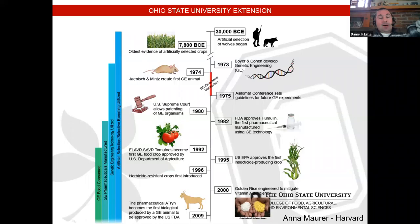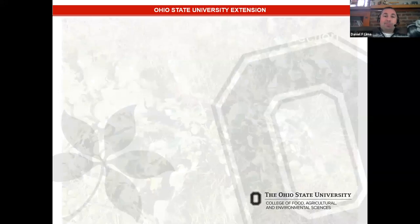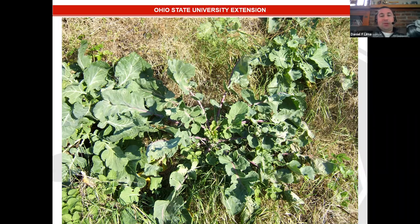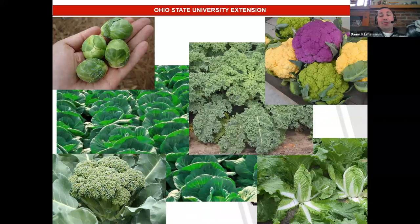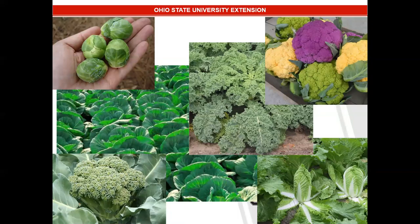Genetic modification didn't get much publicity until the 1990s when the Flavr Savr tomato became the first genetically engineered food crop approved by the USDA in 1992. It didn't really hit the market because of the controversy that followed. Corn followed suit, and golden rice also became part of this timeline.